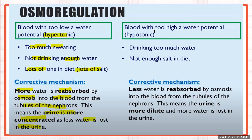When the blood becomes hypotonic — from drinking too much water or not having enough salt in the diet — the corrective mechanism is that less water is reabsorbed by osmosis. The body wants to get rid of excess water, so water leaves the blood through the tubules of the nephrons. This means the urine will be more dilute, as more water is lost.